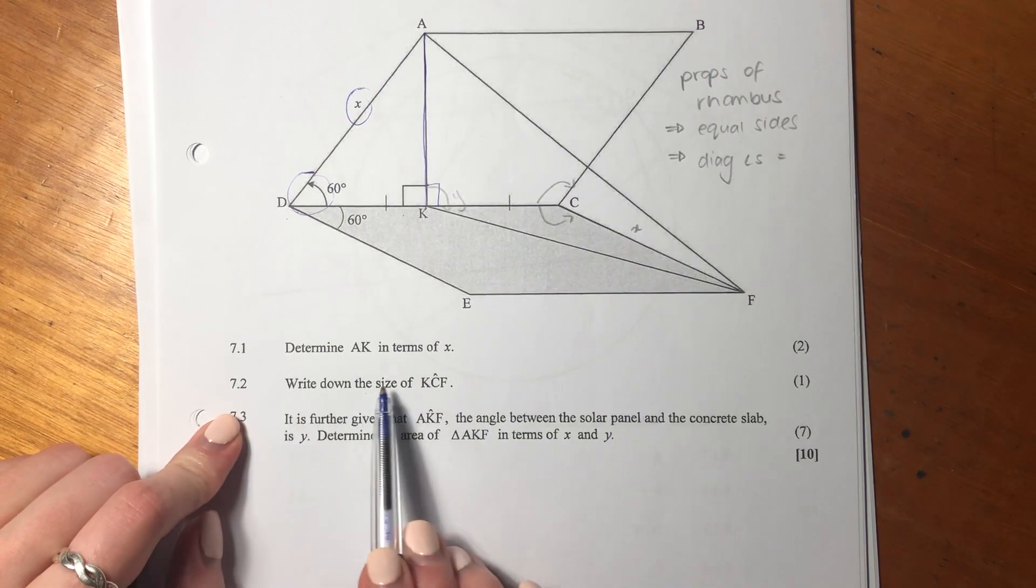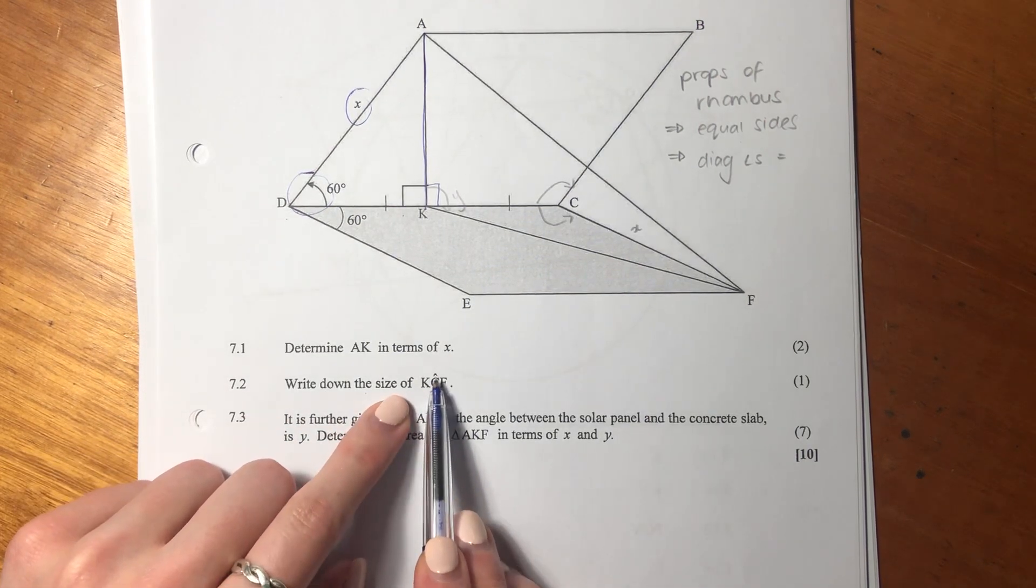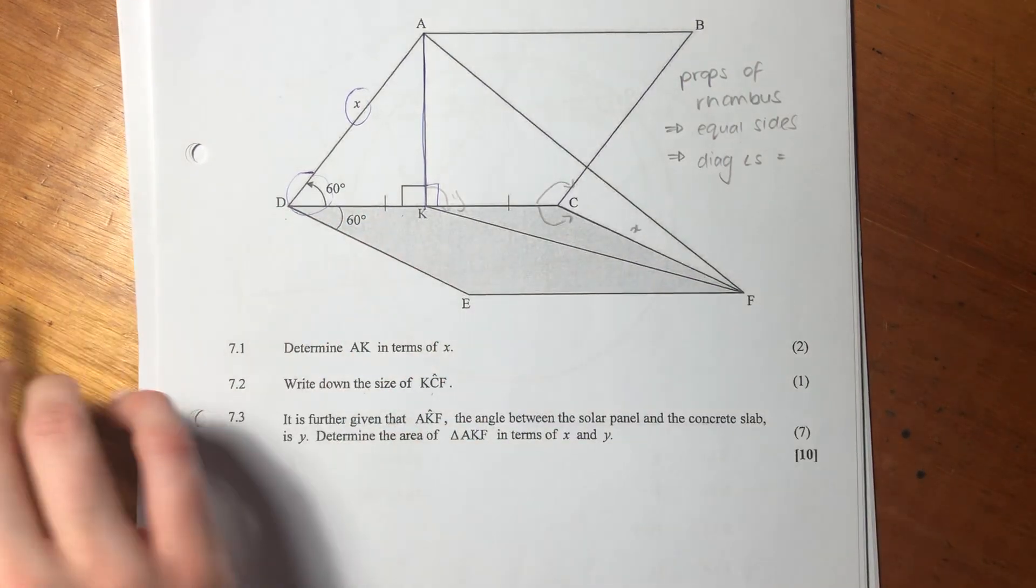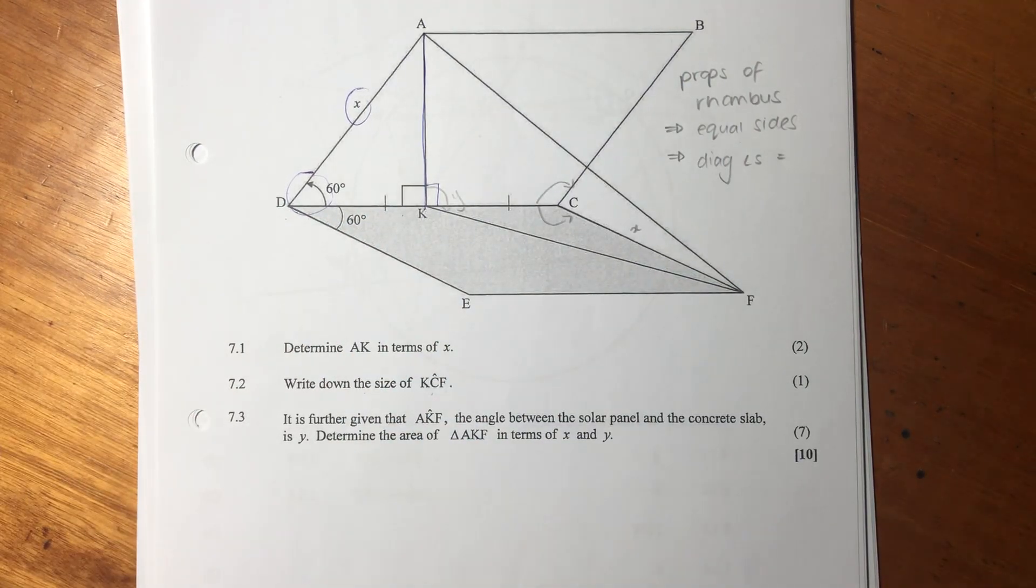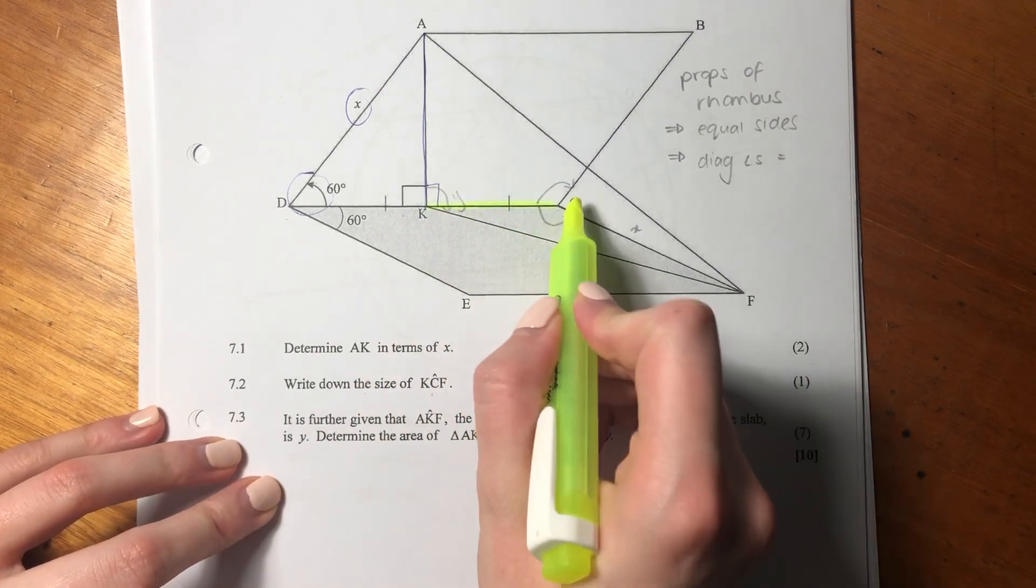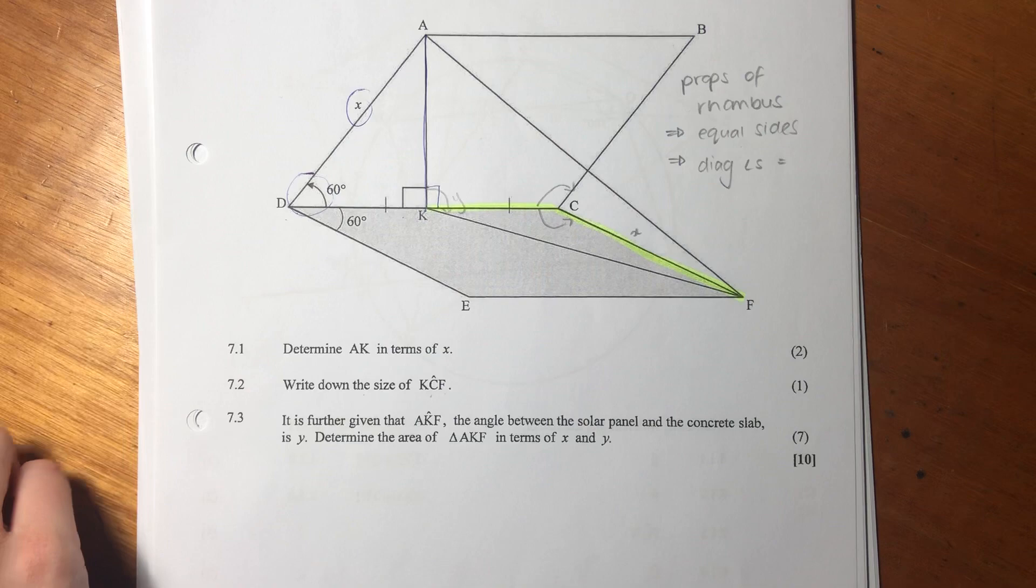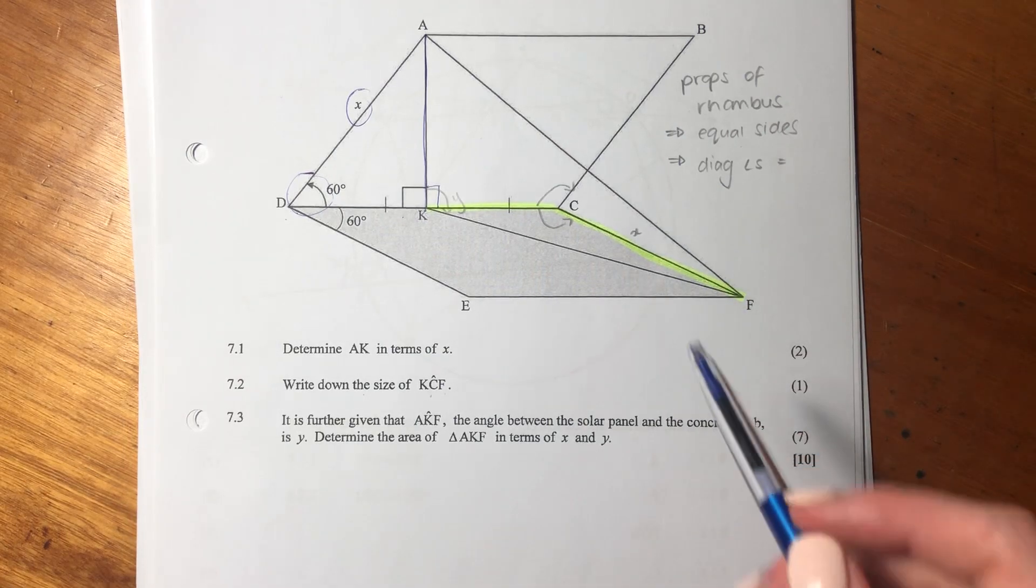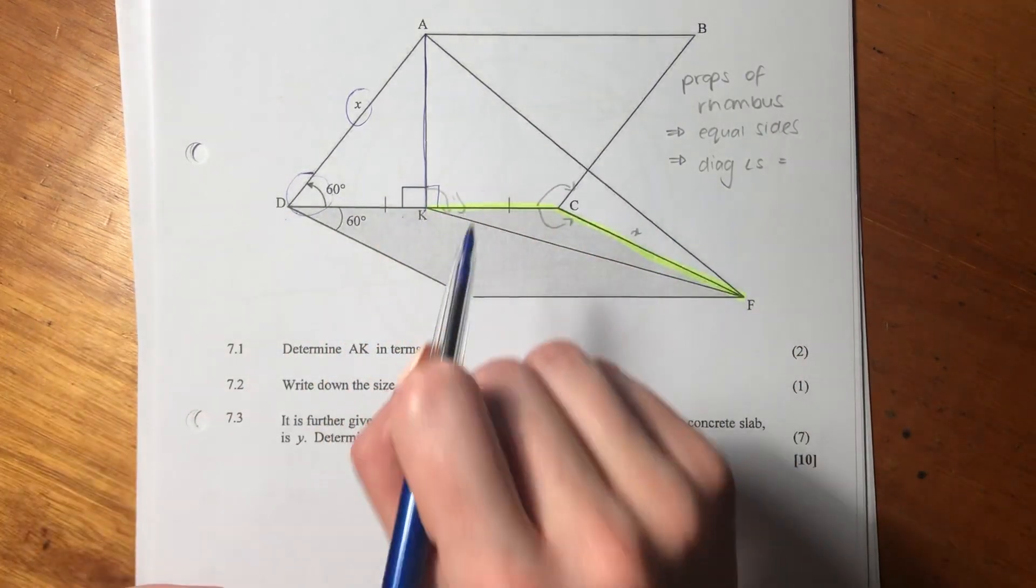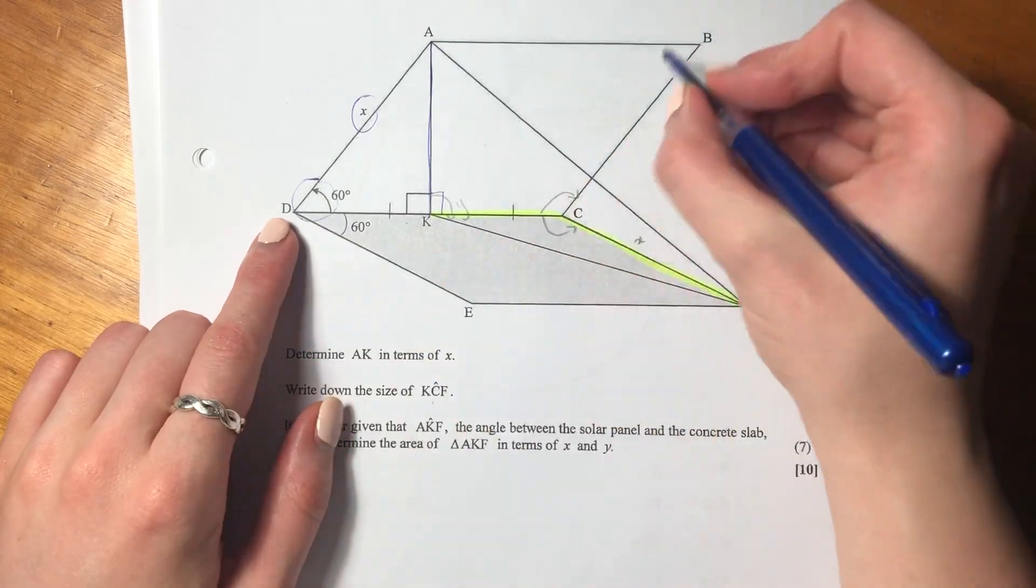For 7.2, it says write down the size of angle KCF. Let me use some color because sometimes it's very tricky to see what's going on. K, C, F. We know that this equals 60, so this is all properties of rhombus. That equals 60.